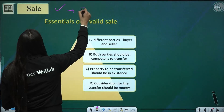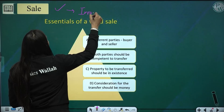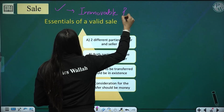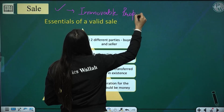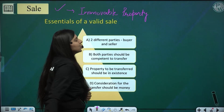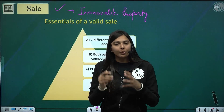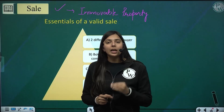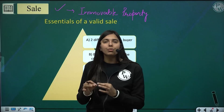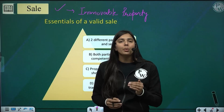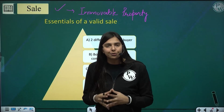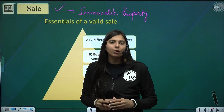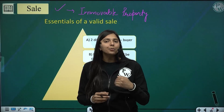However, under the Transfer of Property Act, the concept of sale is a little different. Sale under the Transfer of Property Act is applicable only on immovable property. Transactions relating to movable property are governed by the Sale of Goods Act, whereas all transfers related to immovable property are governed by the Transfer of Property Act.